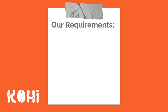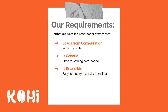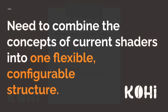What are our requirements for our shader system? We want a new shader system that is able to load from configuration — whether that be in code, which is what we're initially going to do, or from files. Eventually we might even support this from an editor. We also want a shader system that uses generic shaders, with little to nothing hard-coded within it. We want something that is extensible, easy to modify, easy to extend, and easy to maintain. We need to combine the concepts of the current shaders into one flexible, configurable structure.